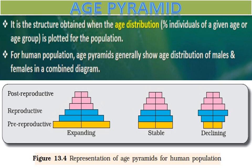The next type is the stable age pyramid, which has a bell-shape and is also called a bell-shaped age pyramid. Here the number of pre-reproductive and reproductive individuals is almost equal — you can see the yellow and blue color bars are similar. Post-reproductive individuals are comparatively fewer. This type of pyramid is observed in countries like the USA and Denmark, and it shows that population size remains stable.